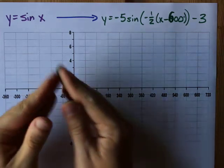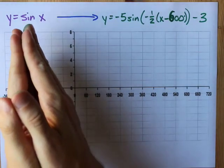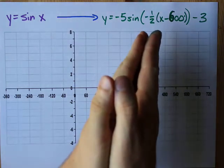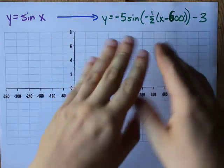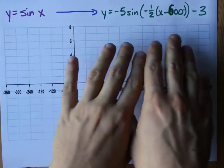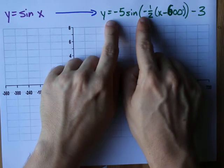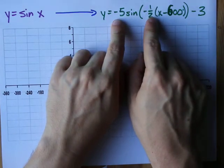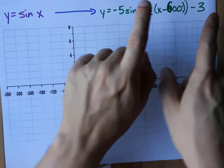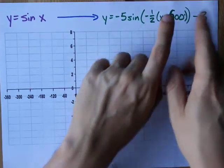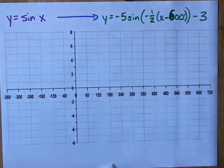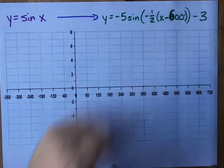Hello. Let's together graph y equals sine x and a transformed version of that function. This transformed function has all of the bits. It has both reflections, both stretches and compressions, horizontal and vertical, and both shifts, left, right, and up, down. It's got it all. Let's do it together.